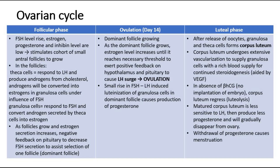Moving to the ovulation phase on day 14, when the dominant follicle is selected, it will grow and the oestrogen level will increase until it reaches the necessary threshold to cause a positive feedback on the hypothalamus and pituitary gland, further causing the LH surge which leads to ovulation. There will also be a small rise in FSH-LH-induced luteinization of granulosa cells in the dominant follicle, causing production of progesterone.